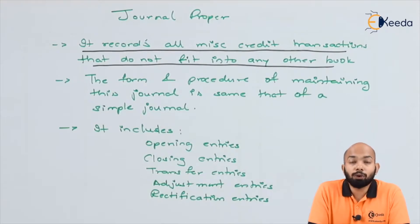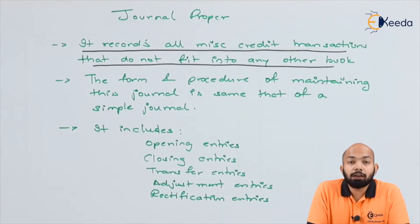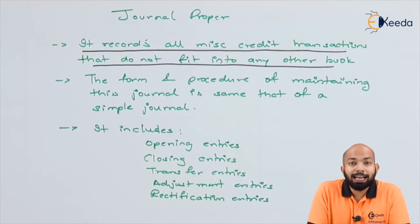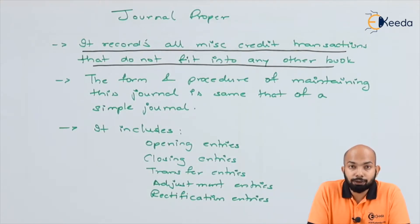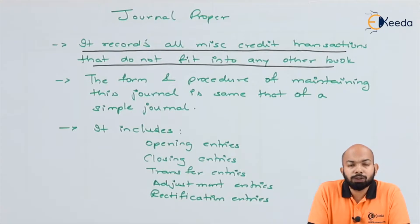It records all those transactions which are credit transactions first of all, and that do not fit into any other book. This is the first definition or a probable point by which you can classify a transaction as a journal proper transaction.